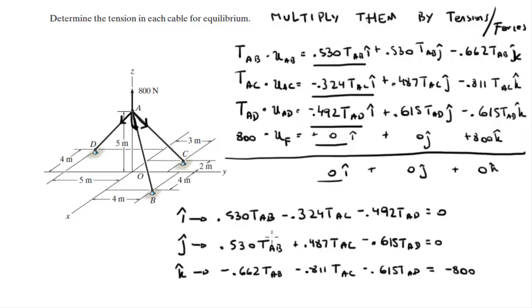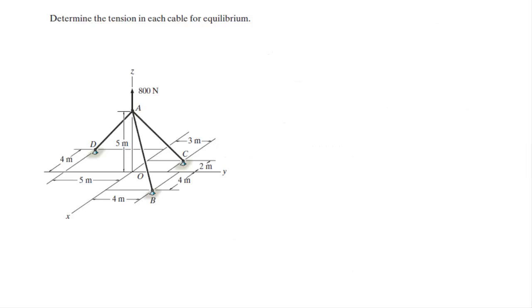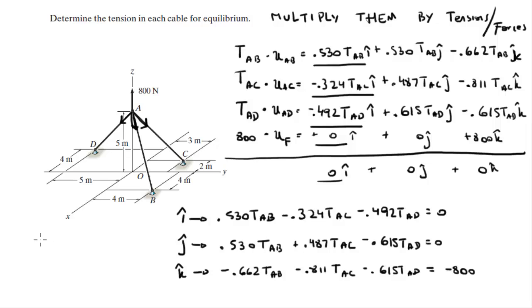We now have a system of three equations and three unknowns, which we can solve algebraically. I prefer to use matrices (Cramer's rule). To keep it clean, let x = T_AB, y = T_AC, and c = T_AD.